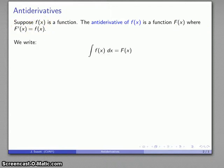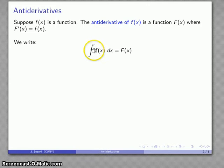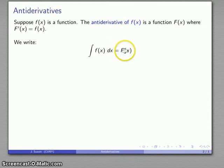The notation we use for that is going to look something like this. For right now, you can read this as the antiderivative symbol of a function. This dx here will play an important role. What this is telling us is that when I differentiate the function capital F, I want to find the derivative with respect to x. The derivative of this, with respect to x, gives us the original function.